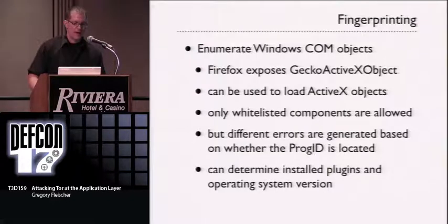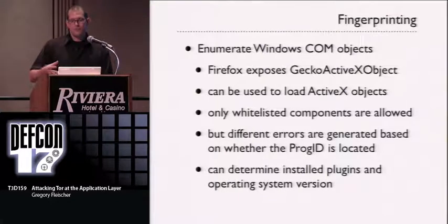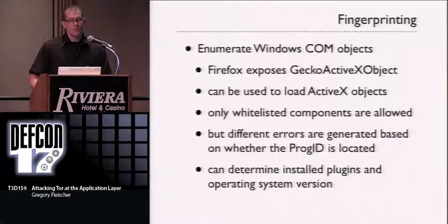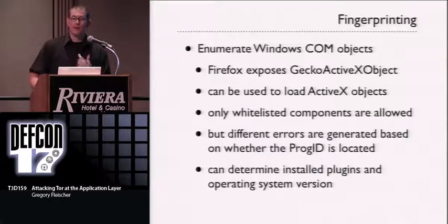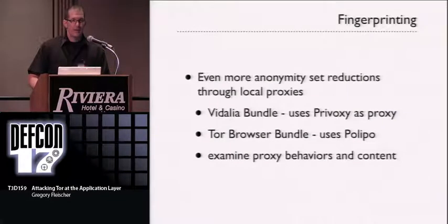We can also enumerate Windows COM objects. Firefox doesn't officially support COM and ActiveX, but there's an old Netscape thing called Gecko ActiveX Object. You can try to instantiate ActiveX objects, but there's a whitelist that doesn't work well. What's interesting is the error messages differ depending on whether a COM object exists on your local machine or not. You can't actually create it or call methods, but simply by testing for existence you can look at different plug-ins and programs installed — even specific versions, since Microsoft Word varies its COM object ProgIDs by version.